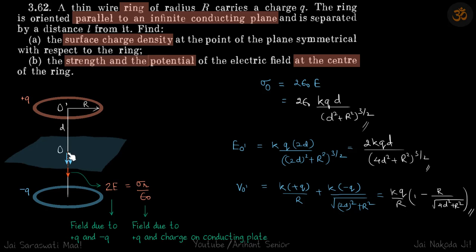So electric field at middle point - because of both the rings it's going to be downwards, its value is going to be the same. So let's say it is E, so downwards it is 2E equals sigma_r by epsilon_0. This is the electric field due to a conductor just in the vicinity of a conductor. 2E is field due to the plus q charge and minus q charge on the rings.